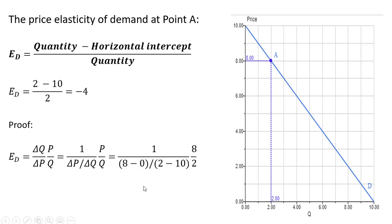Let's calculate the slope of the demand curve between point A and the horizontal intercept. Change in P over change in Q. The change in P from 8 to 0 and the change in Q from 2 to 10 gives us the slope.